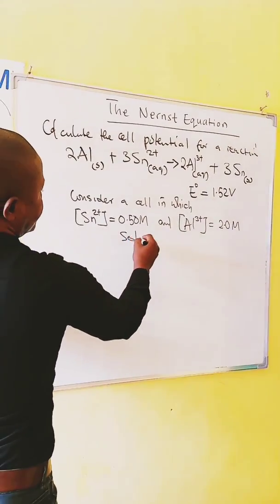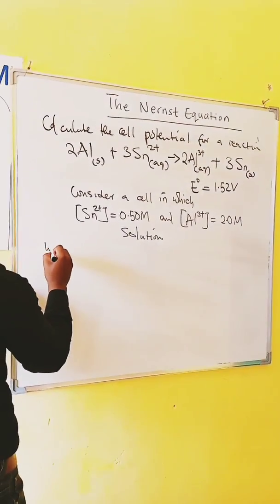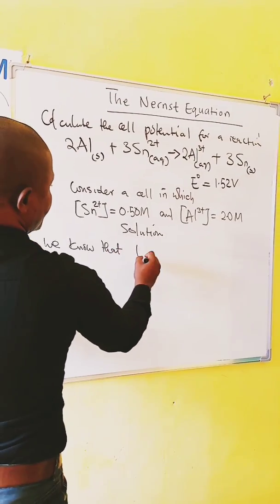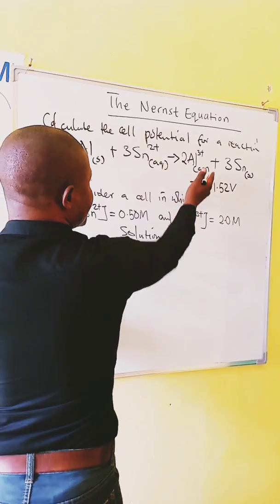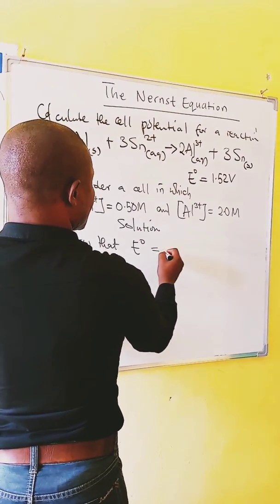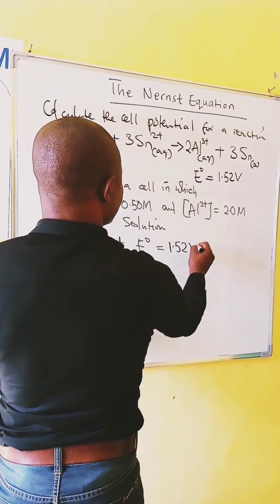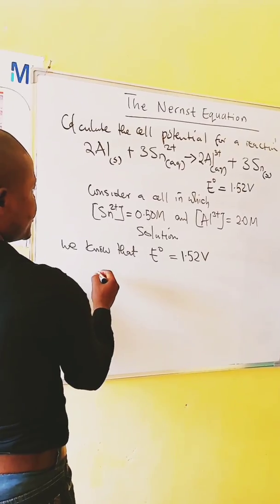Solution. We know that the standard cell potential for this reaction is equal to 1.52 volts. Let's calculate Q.